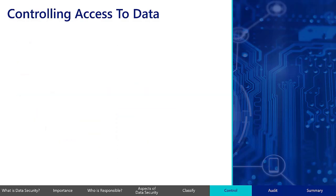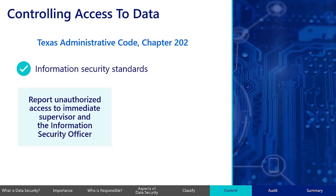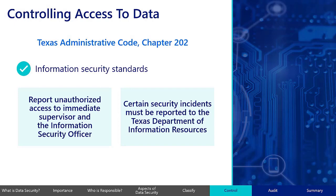The Texas Administrative Code, Chapter 202 (TAC 202), includes information security standards, including incident reporting requirements. In the event that unauthorized access to data occurs, any state employee discovering the incident has a responsibility to report the incident promptly to their immediate supervisor and to their agency's information security officer or similar role. The organization must also report certain confirmed or suspected security incidents to the Texas Department of Information Resources if the incident meets criteria specified under TAC 202. Note that it may not be possible to gather all relevant information immediately, in which case it is generally advisable to submit an initial report as soon as possible and update the report as new information is collected.